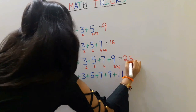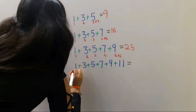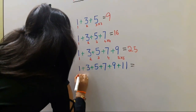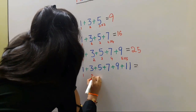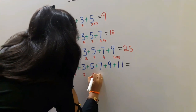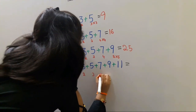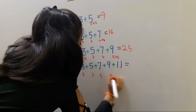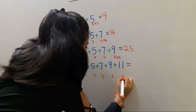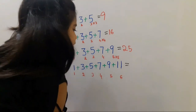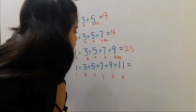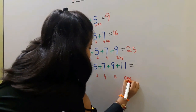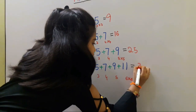Next sum. We should again count the numbers: 1, 2, 3, 4, 5, 6. We should multiply by the same number. 6 6's are 36.